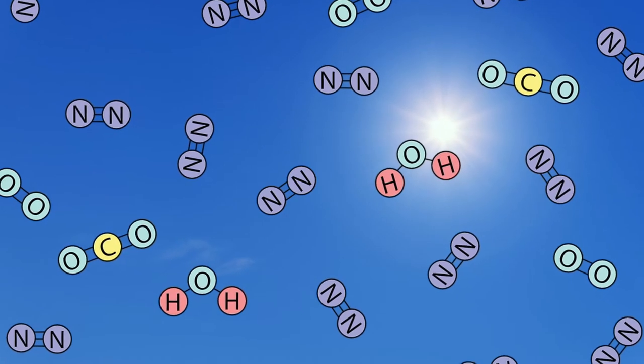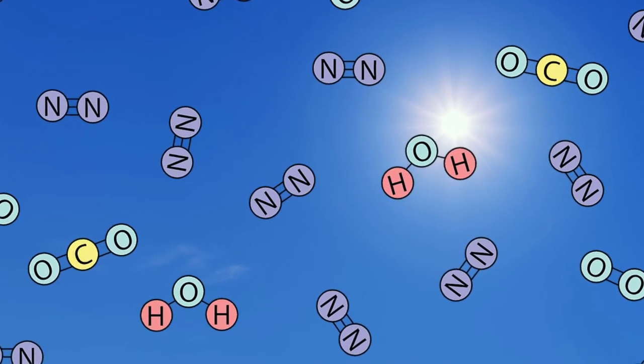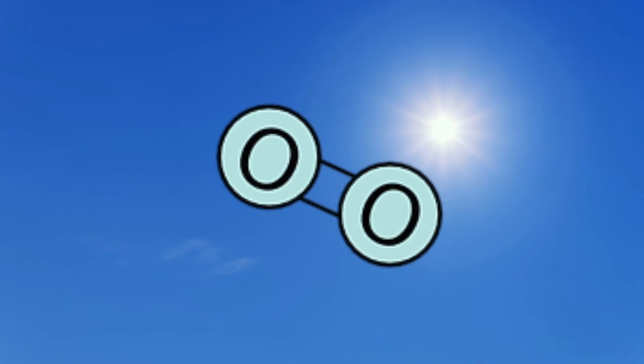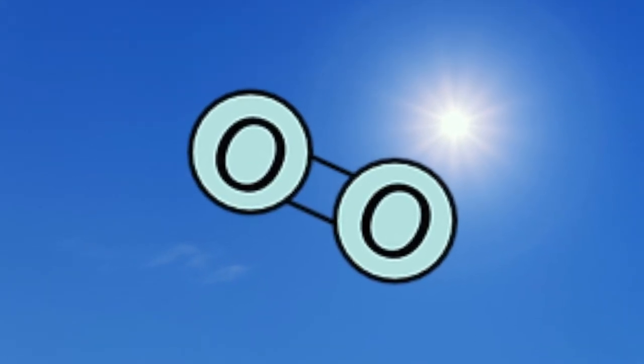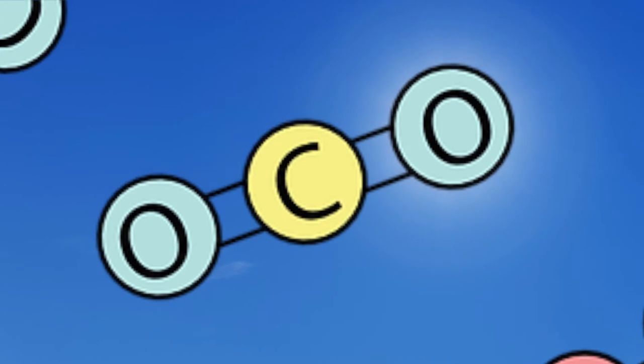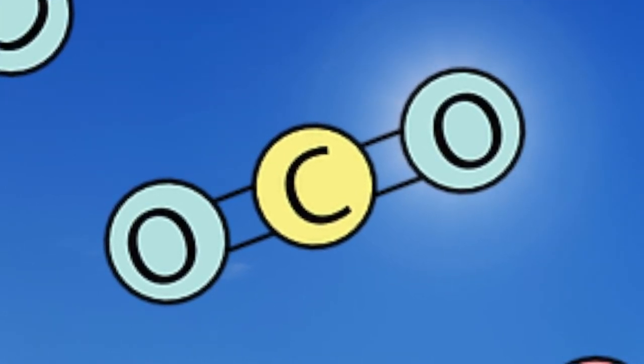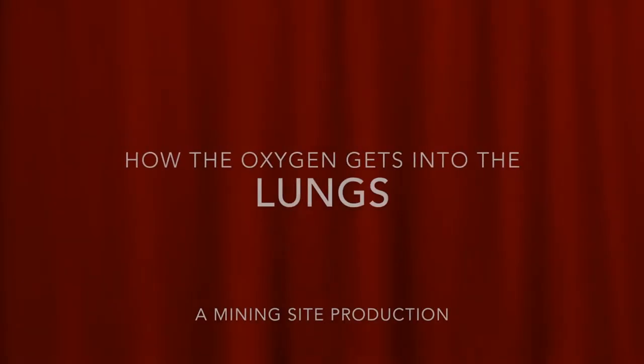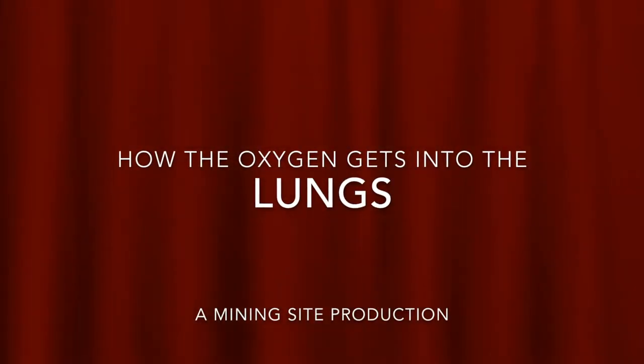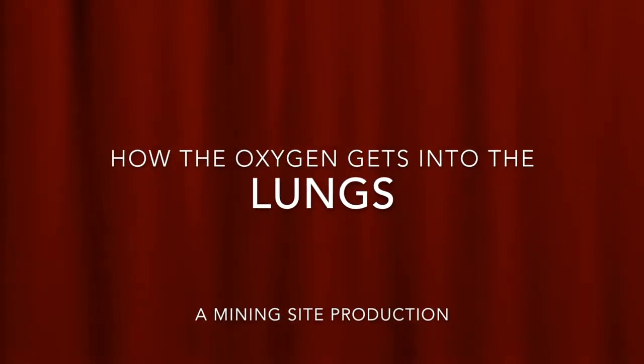But what is in the air that we're breathing? There are lots and lots of particles. Particles of different gases. But the one we want is oxygen. And the one we want to get rid of is carbon dioxide. How the oxygen gets into the lungs.